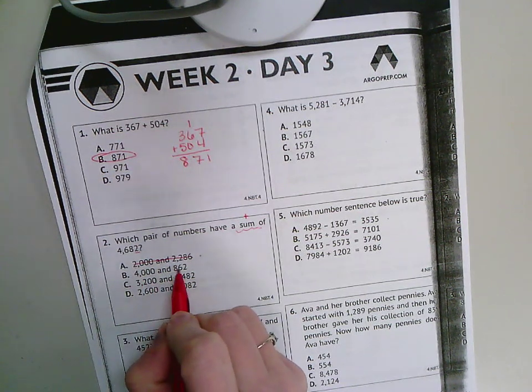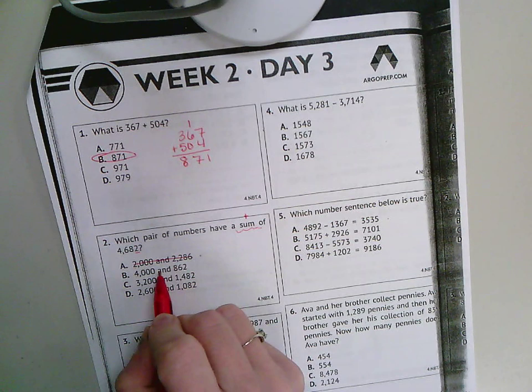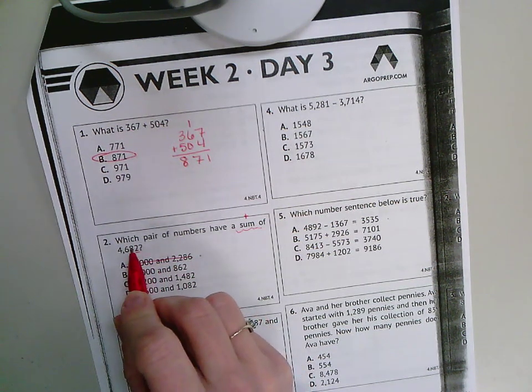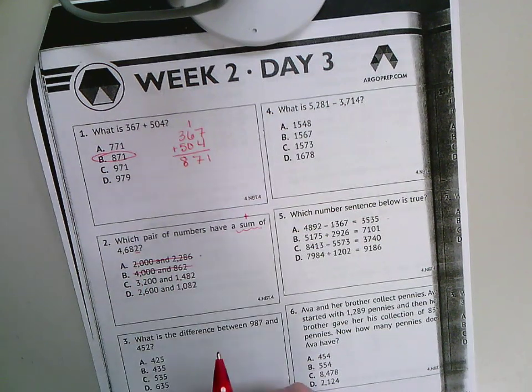4,862: the 2 plus 0 gives me that 2, 6 plus 0 gives me 6, and I need an 8 so that's close but not quite.